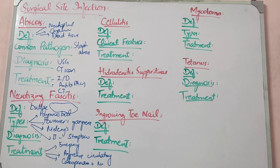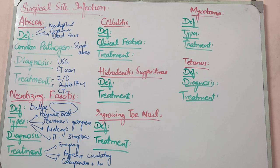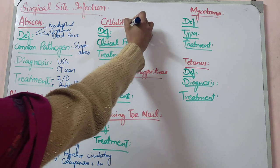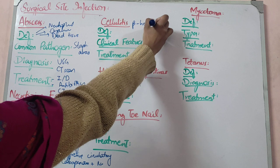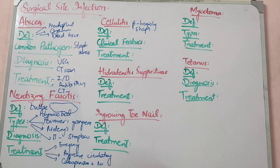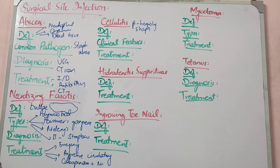Then cellulitis: red, hot, tender skin. This infection is limited to the superficial dermis — it is not much deeper than the skin. Cellulitis does not have separation or pus production. The most common organism is beta-hemolytic Streptococcus — Strep is the most common, second is Staph. Clinical features: expanding erythema, redness, warmth, tenderness, swelling, defined borders, with no separation.